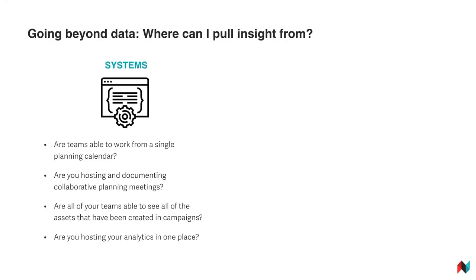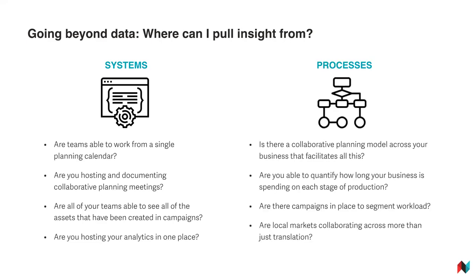One of the central themes is the systems you're using, and we've already talked about the importance of technology. But going beyond the analytics for a moment, you should be asking whether your teams are able to access the same production calendar, whether you're able to host and document collaborative planning meetings, whether you're using a single planning tool, and whether all of your teams are able to see the assets that have been created and have access to content they could potentially reuse. There are also more logistical questions like whether there's a collaborative planning model in place that facilitates all of this, whether you're able to actually document all of those metrics we spoke about earlier — because whether or not these are being documented plays a big role in the overall efficiency of the business before you even get to the actual performance of them.